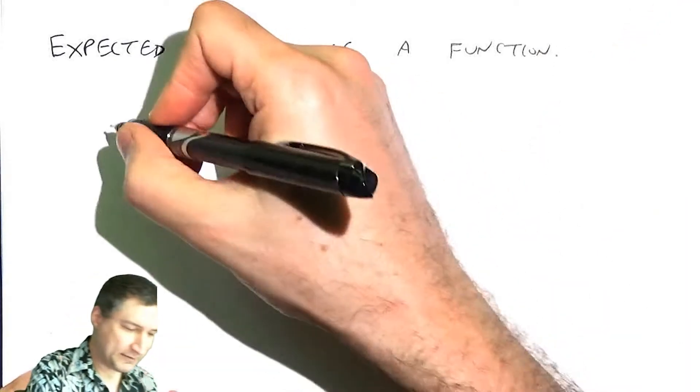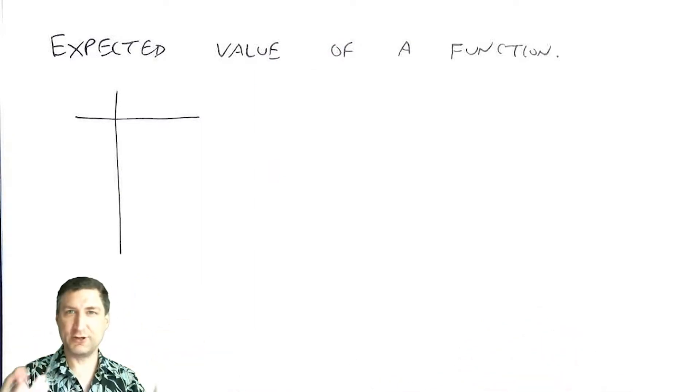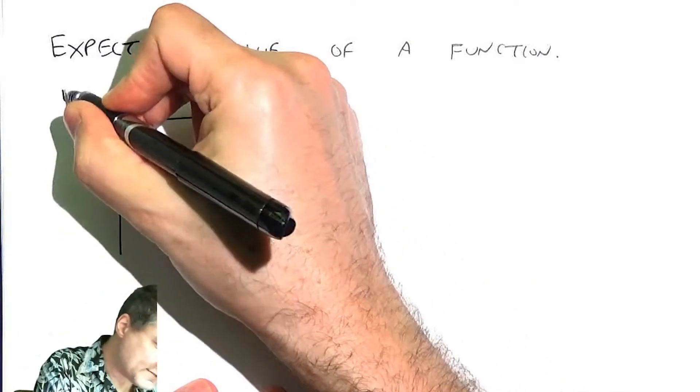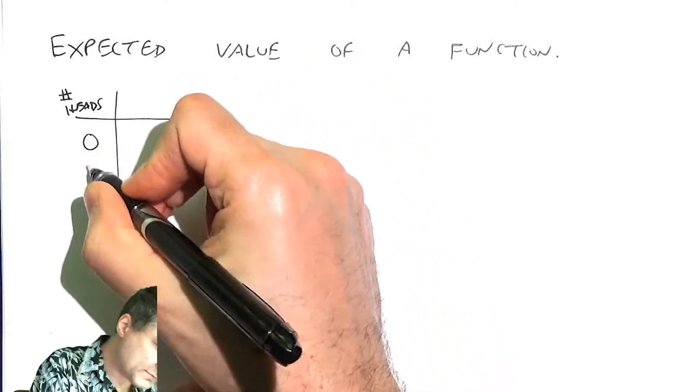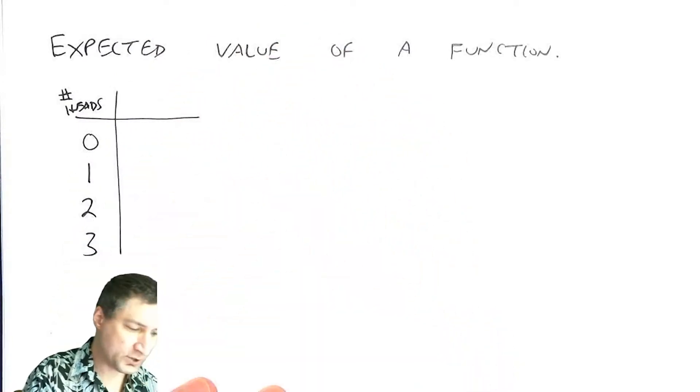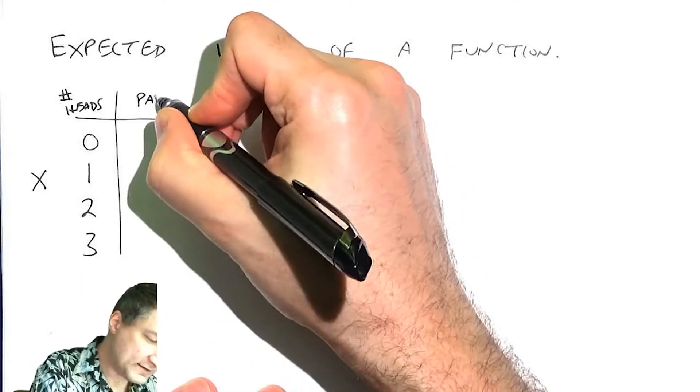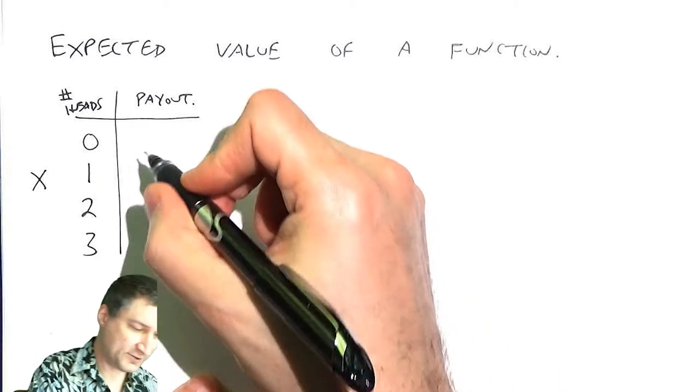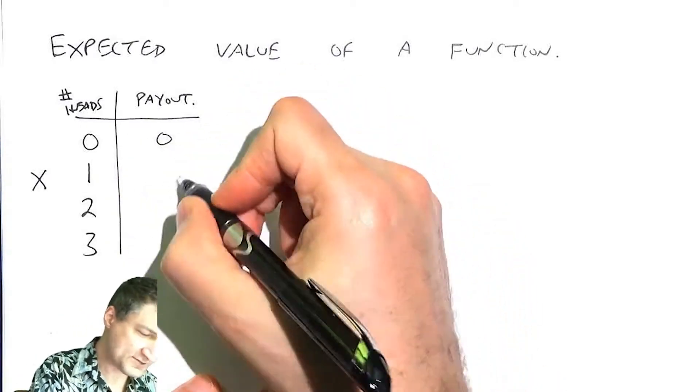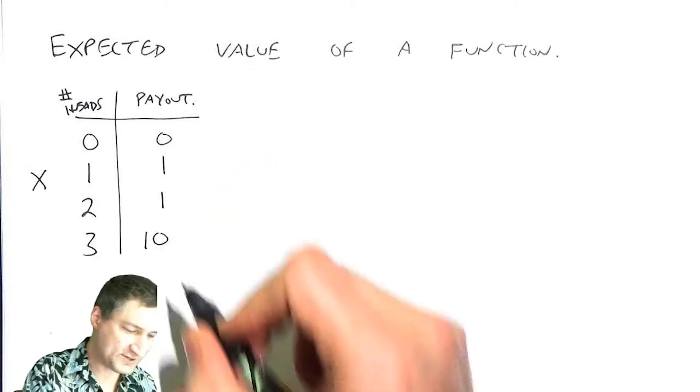So here's an example. Suppose we play a game where we take the coin flips from the last time, and we look at the number of heads that we got. The possibilities for this are 0, 1, 2, or 3, and that's my random variable X. And then I'm going to pay you some amount. So if you get 0 heads, you get $0. If you get 1 head, you get $1. If you get 2 heads, you get $1. And if you get 3 heads, you get $10.